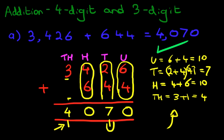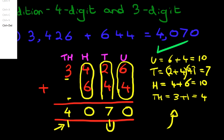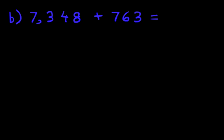4,070. And that is correct. Now let's clear the screen, and we can work through a second example. What is 7,348 plus 763?